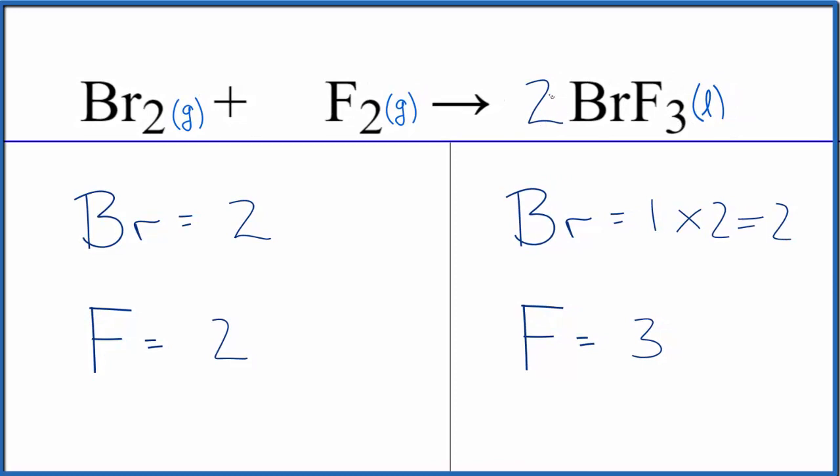Three times two, this two here, it applies to everything. So the three times the two, that gives us six of these fluorine atoms. So now we have an even number. To fix this, all we really need to do is put a three in front of the fluorine gas.